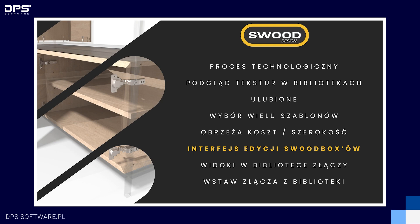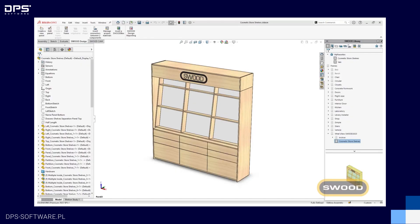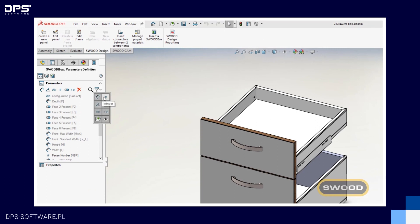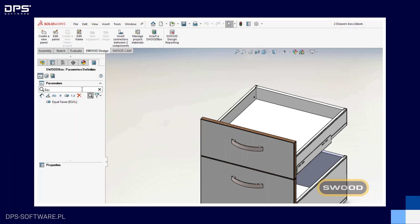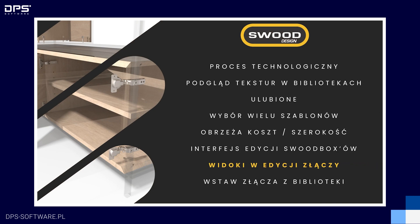W nowej wersji SWUT zmieniono także interfejs edycji SWUT-boxów. Kto tworzył lub edytował SWUT-boxa, ten wie, jak uciążliwe może być szukanie parametru z długiej listy wszystkich dostępnych w zakładce definicji parametrów SWUT-boxa. W nowej wersji wprowadzono filtrowanie parametrów w zależności od typu, a także okno wyszukiwania po nazwie. Możemy wybrać, który typ parametru chcemy zobaczyć, wyszukać dany element, a także wprowadzono foldery odpowiadające kategoriom parametrów. To nowość, która bardzo ułatwi korzystanie z tego interfejsu i tworzenie SWUT-boxów.